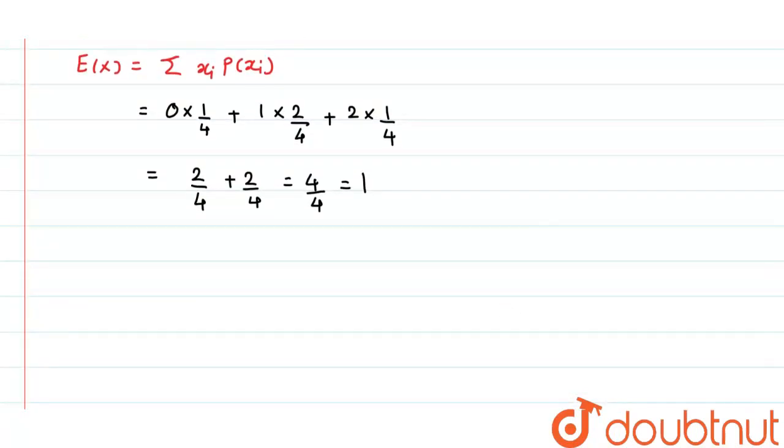Now, let me find out E of X square. E of X square will be sigma of xi square into P xi. So, this will be 0 square into 1 by 4 plus 1 square into 2 by 4 plus 2 square that is 4 into 1 by 4.